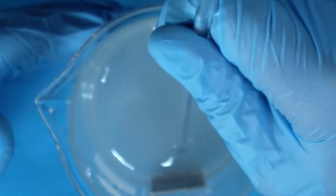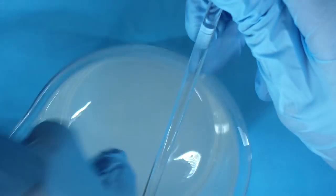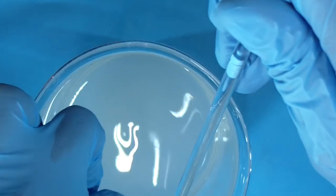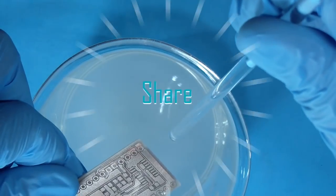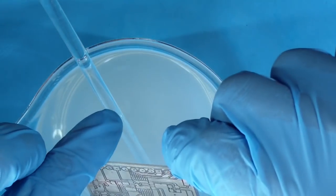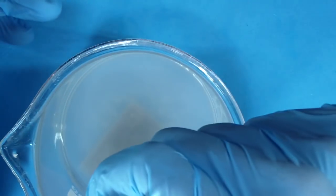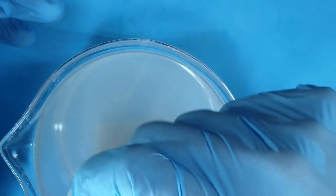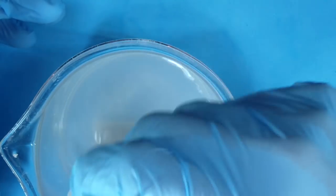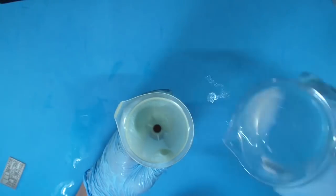After few seconds we will start to see a thin layer of tin building on the PCB. Keep the solution moving like this to get even tin coverage. After one or two minutes remove the PCB from the solution and rinse it well with warm water. And don't forget to seal your solution inside the bottle again.